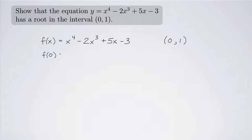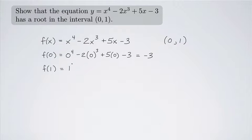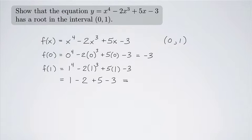Let's see what happens at the ends of the interval. f(0) = 0 to the fourth minus 2 times 0 cubed plus 5 times 0 minus 3, which equals 0 minus 0 plus 0 minus 3, so f(0) = -3. And f(1) = 1 to the fourth minus 2 times 1 cubed plus 5 times 1 minus 3, which is 1 minus 2 plus 5 minus 3 = 1. So f(0) is negative and f(1) is positive, which means between 0 and 1, since this is a continuous function, it must have crossed the x-axis at least once.